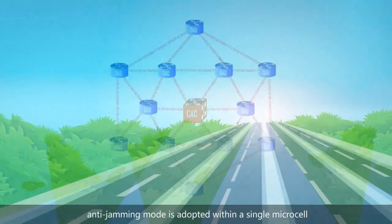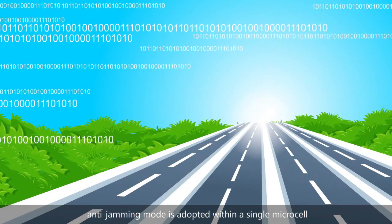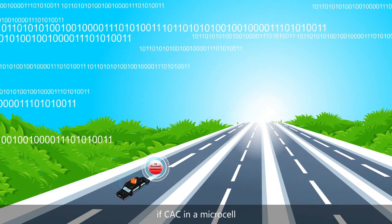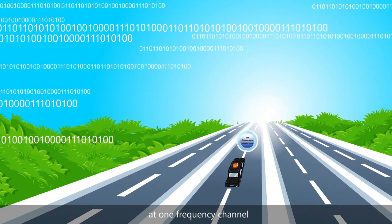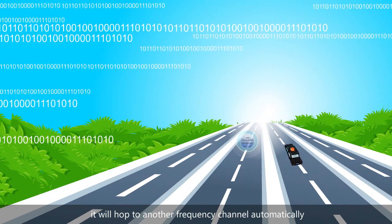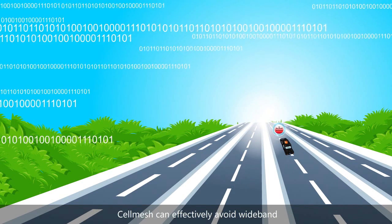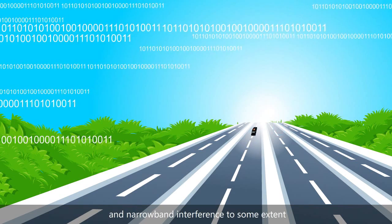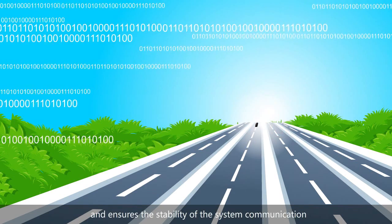Multi-channel hopping anti-jamming mode is adopted within a single microcell. If the CAC in a microcell encounters a communication failure at one frequency channel, it will hop to another frequency channel automatically. CELL MESH can effectively avoid wideband and narrowband interference to some extent and ensures the stability of the system communication.